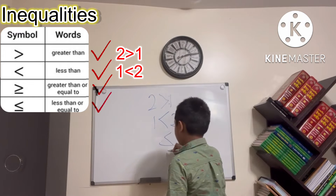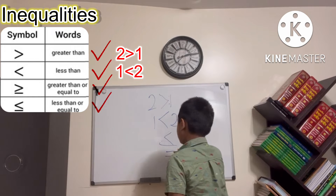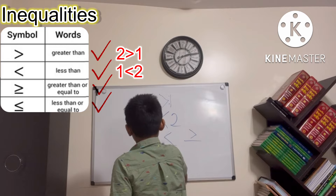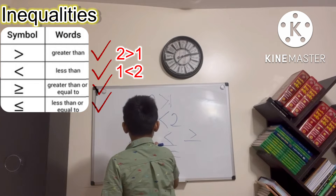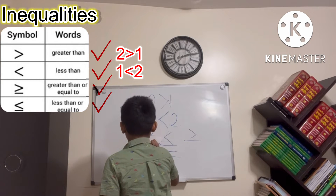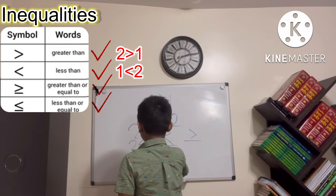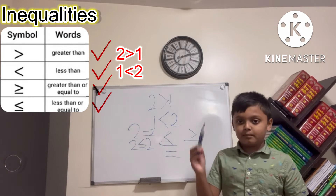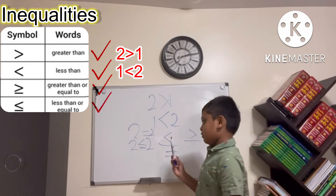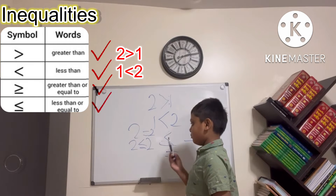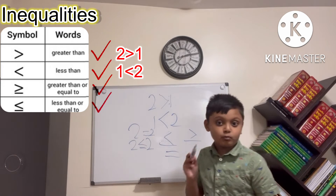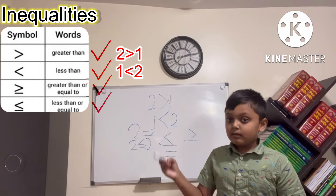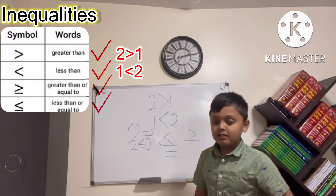You can also use the equal sign, like two is equal to two. You can also use two is less than or equal to two, because both conditions can apply. So if two is less than or equal to one, that means two is less than one.